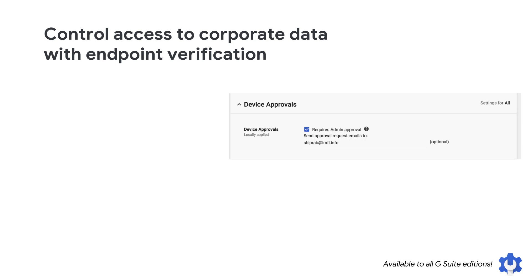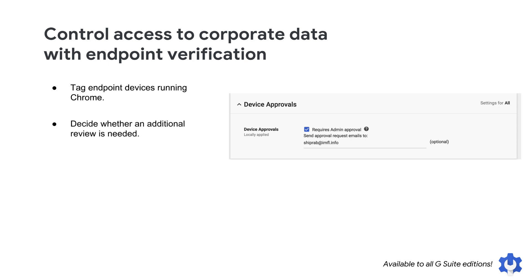You now have more control over managing device access to your corporate data through limiting G Suite access for devices that use endpoint verification. With this ability, you can tag endpoint devices running Chrome as approved or blocked and configure the access level using the Access Context Manager, and decide whether an additional review is needed for newly registered endpoint verification devices. This will bring similar functionality to what's currently available for mobile device management to desktop devices using Chrome OS or Chrome browser.